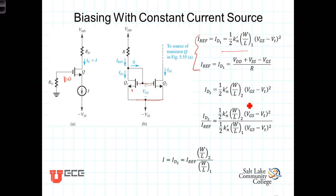Because of that, we can determine the relationship between I_D2 and this reference current by taking the ratio of this equation to this equation, which is what we have here.